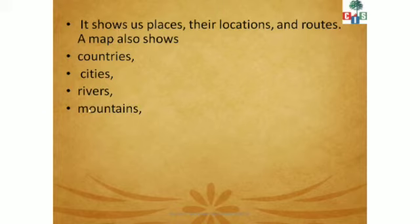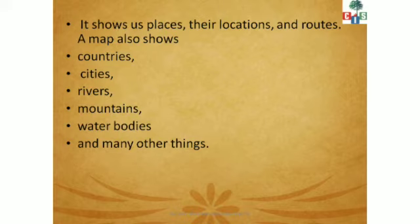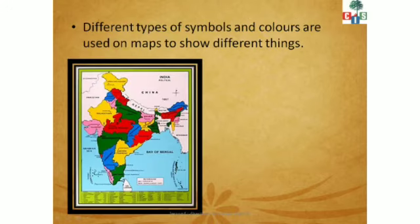We can also see water bodies on a map — rivers, oceans, and lakes. Those themes we can also see on the map. Then there are many other things, like which place has more forests, which place has wild animals. Every type of thing has a different map. So these are the many things we can see in a map — it is very interesting!